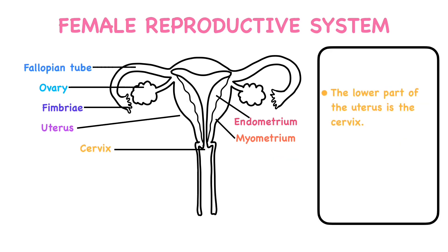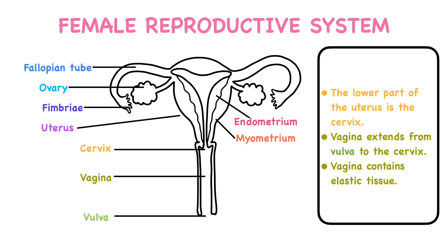The lower part of the uterus is the cervix, which connects the uterus and vagina by its narrow lumen. The vagina is the part that connects the female reproductive system to the external world. It extends from the vulva to the cervix. It is a muscular tube that stretches during childbirth to allow the passage of the baby, because the vagina contains elastic tissue. It also helps in sexual intercourse when the penis is placed in it.